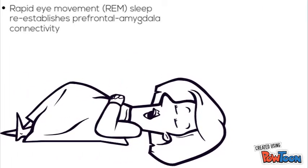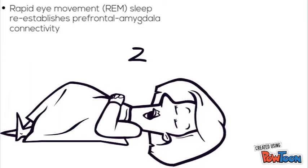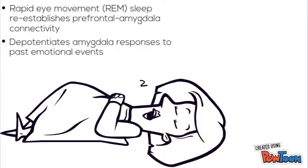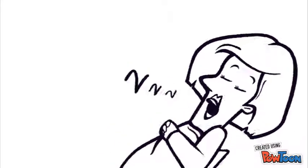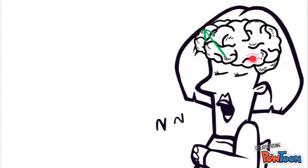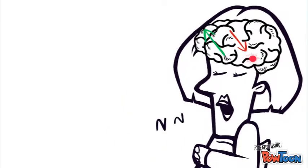REM sleep re-establishes prefrontal amygdala connectivity and depotentiates amygdala responses to past emotional stimuli. In other words, it increases emotion regulation capacity and decreases amygdala sensitivity to prior events.